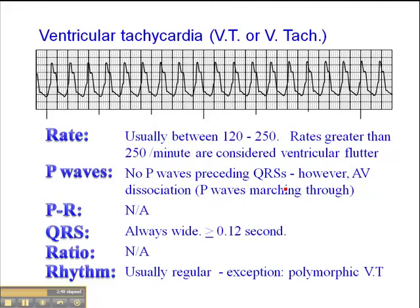The rhythm should be regular, with one exception: polymorphic VT, meaning VT occurring as a result of multiple ectopic foci in the ventricle. One example of a polymorphic VT would be torsade de pointe, which means twisting of the points. There's an example of torsade de pointe in the ECG exercises at the back of the book.